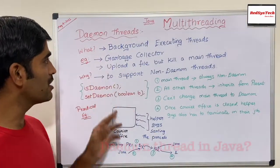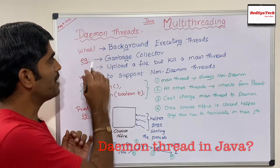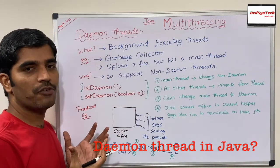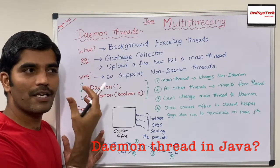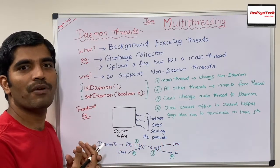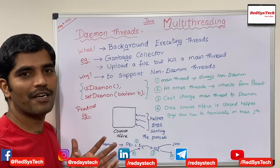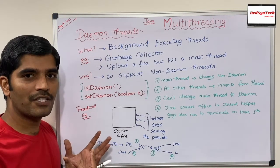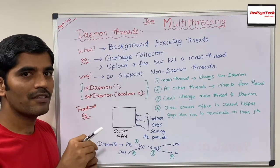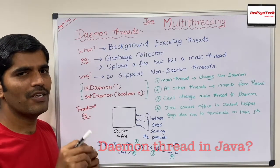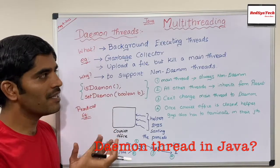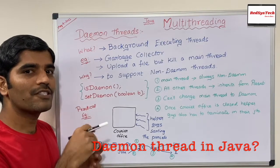Here we are going to look into the concepts of daemon threads. Basically, a daemon thread is nothing but a background-executing thread. In a multi-threaded environment, not all threads are ones you're actively working with — there are some threads working in the background. A typical example is the garbage collector in any Java program. The garbage collector is another thread that actually runs in the background to check if any object has not been used for a very long time, and then it cleans that object. This happens at the JVM level without the programmer noticing it.